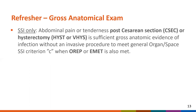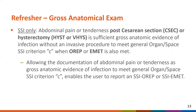We receive a lot of questions related to gross anatomic evidence of infection post-CSEC and hysterectomy procedures. To be very clear, only for post-CSEC or hysterectomy procedures can abdominal pain or tenderness be used as gross anatomical evidence of infection to meet general organ space SSI criterion C, when OREP or EMET is also met. We allow abdominal pain or tenderness in post-CSEC or post-hysterectomy patients to meet general organ space C because these patients may not return to the OR for visualization of infection and there may not be another way to satisfy general organ space SSI criteria in a patient that also meets OREP 3B or EMET 2. So allowing abdominal pain or tenderness as gross anatomic evidence enables the user to report an SSI OREP or SSI EMET.